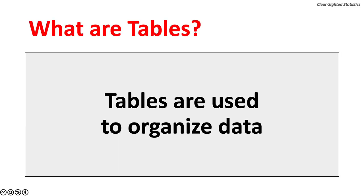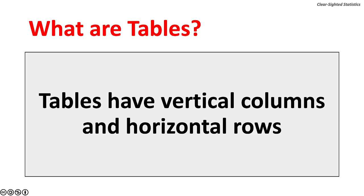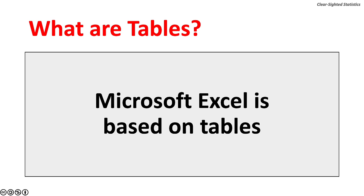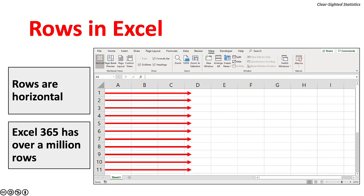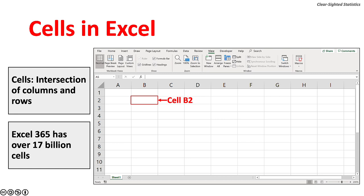What are tables? Tables are used to organize data. Tables have vertical columns and horizontal rows. Microsoft Excel is based on tables. The columns are vertical and are labeled with letters. Excel 365 has over 16,000 columns. Rows are horizontal, and Excel 365 has over a million rows. In Excel, the intersection of a column and row is called a cell. Cell B2 is highlighted in red. Excel 365 has over 17 billion cells.